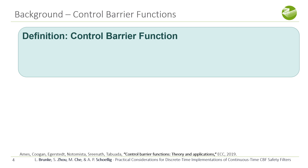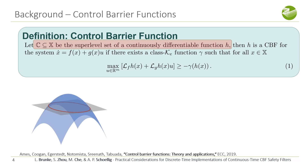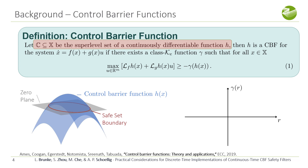So what is a CBF? It is a continuously differentiable function H whose zero super level set defines a safe set C. If the CBF condition in equation one is satisfied, then the set C is control invariant. The lower bound in the CBF condition uses a class kappa function which passes through the origin and is strictly increasing.